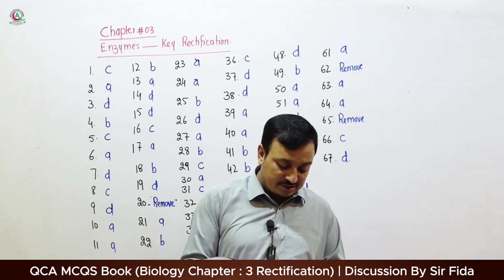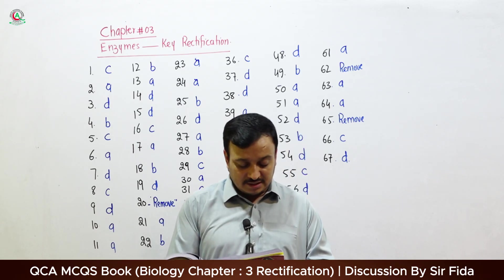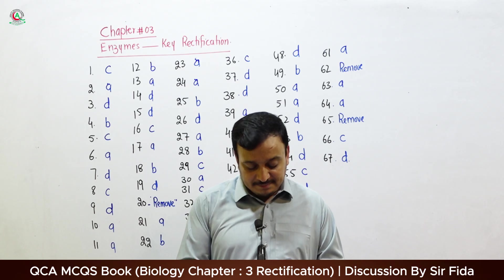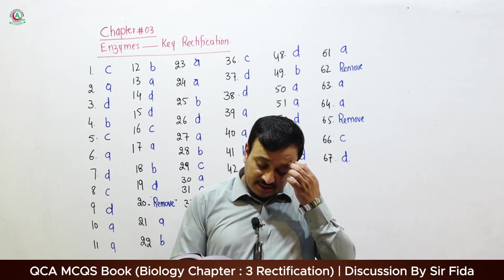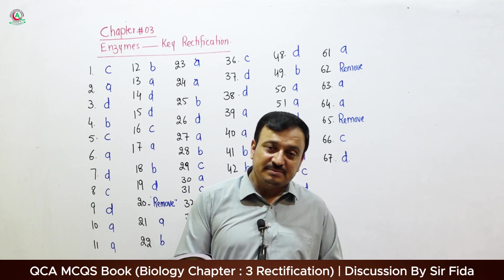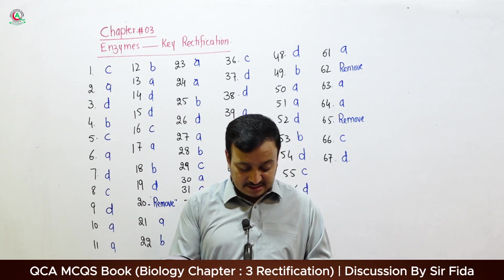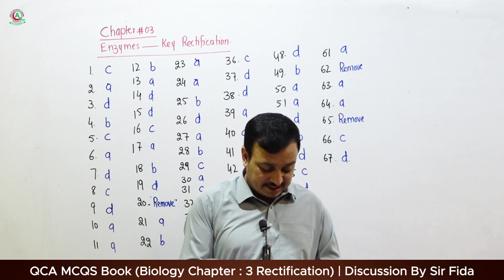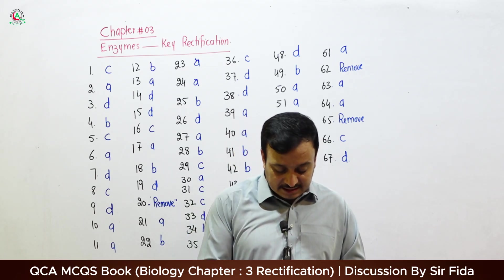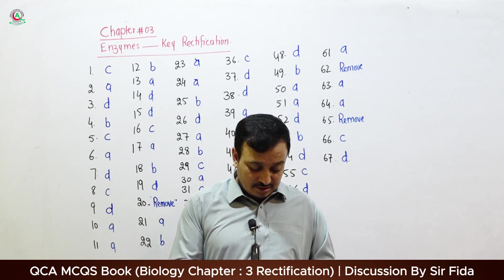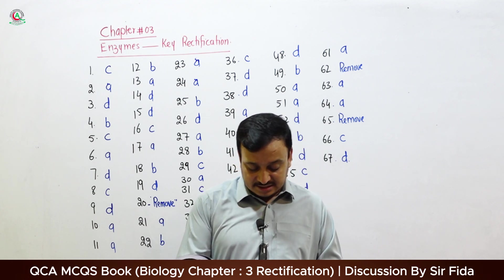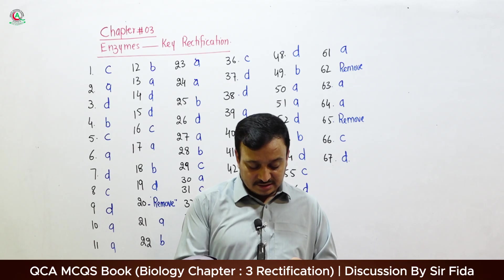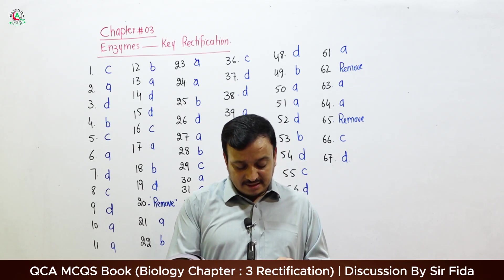Question 8: The inactive form of enzyme is — Pepsinogen and Trypsinogen — correct answer is C: Both A and B. Question 9: Pepsin enzyme works in a variable pH environment, so the correct answer is D: All of these. Question 10: The study of enzymes is called Enzymology — correct answer is A.